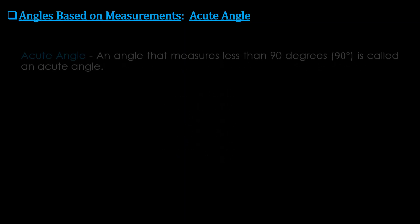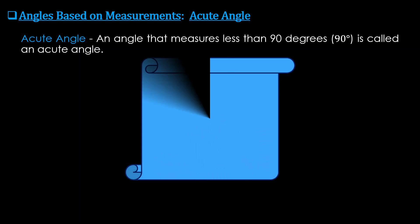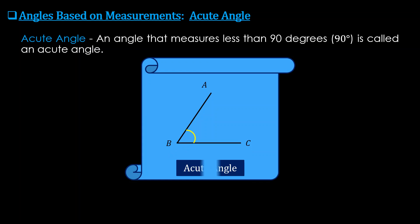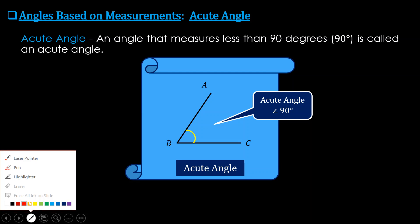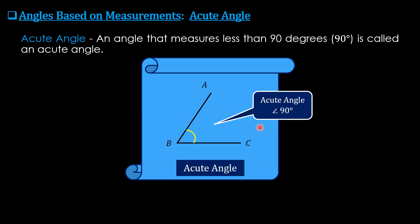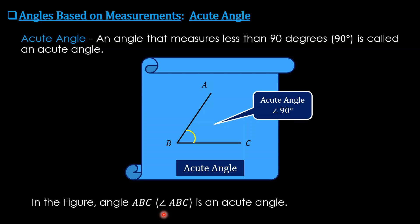An acute angle is an angle that measures less than 90 degrees. Here is the figure — so the acute angle is less than 90 degrees. In the figure, angle ABC is an acute angle.